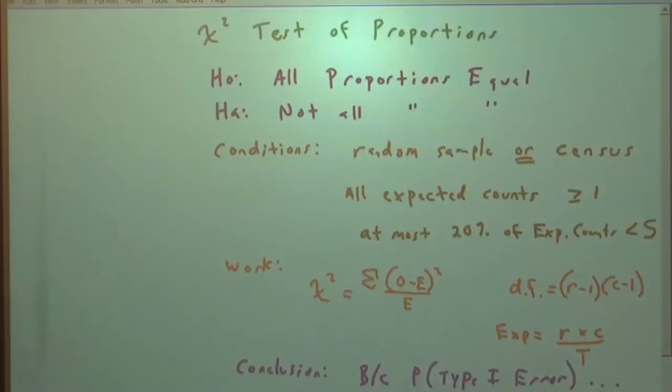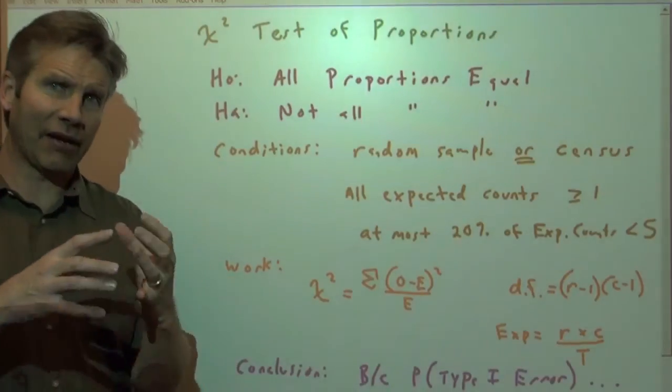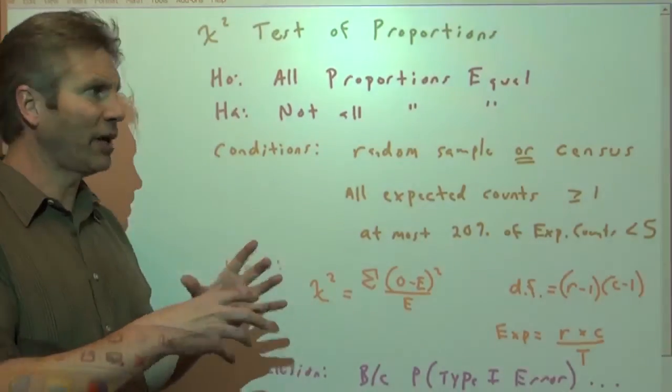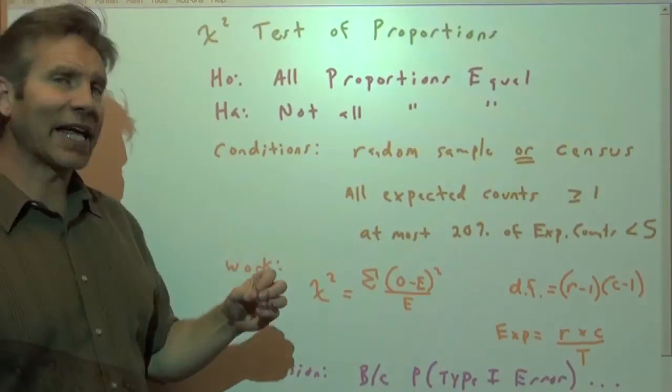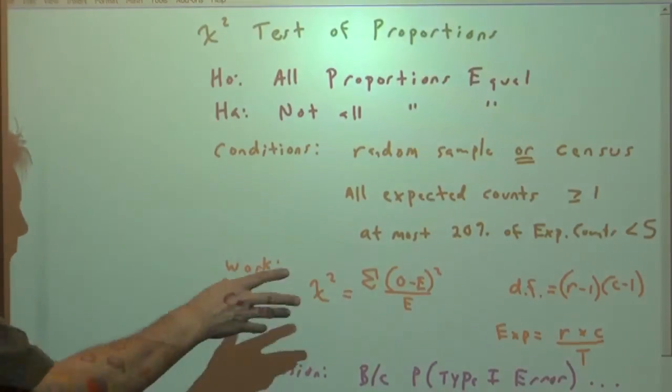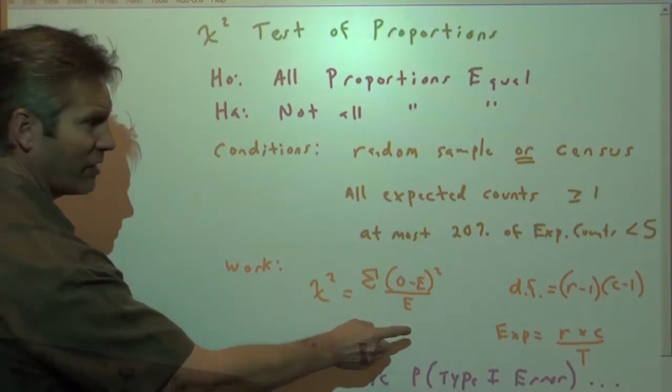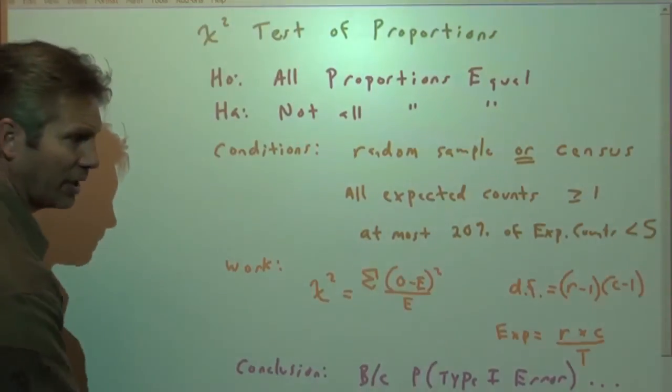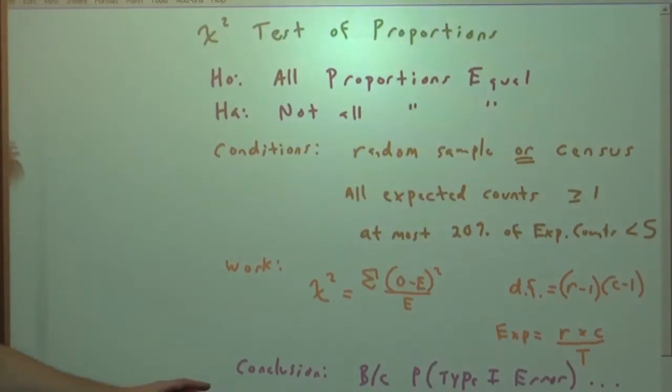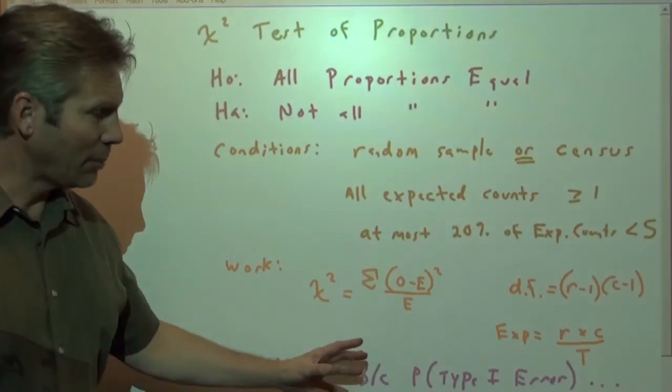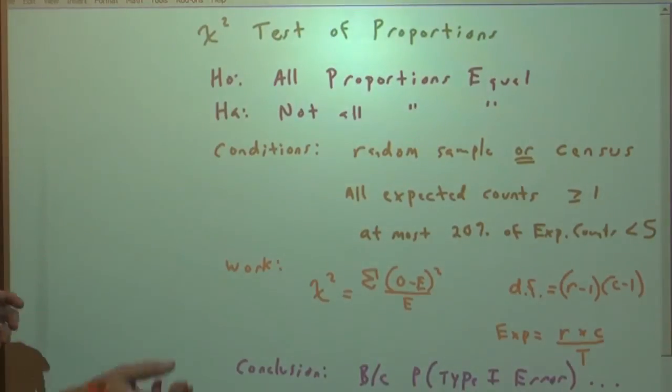Last idea, then, is right here. For the test of proportions, here's our write-up. We say we're doing a chi-squared test of proportions. We have the null and alternative. We have the conditions that the data either came from a random sample or a census. We have data for a whole population. All the expected counts need to be at least one, and at most, 20% of the expected counts less than 5. We show our work with the test statistic. Don't forget degrees of freedom. And this is how we find expected value. And then lastly, the conclusion: because the probability of a type 1 error is either greater than 0.05 or less than 0.05, we either reject the null or fail to reject the null.